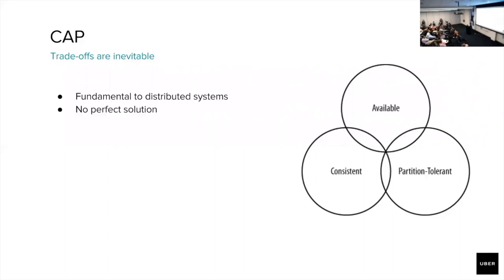A consistent system guarantees that every read will serve up the most recent write or error request, while an available system will guarantee that every request is met with a non-error response, but with no guarantee that that response will be the most recent write. And a partition-tolerant system guarantees that it can continue to operate while requests are dropped or delayed.